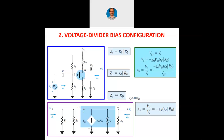We will not have any additional exercise on voltage divider bias because the only difference between this circuit and the fixed bias circuit is Zi; otherwise everything is the same.